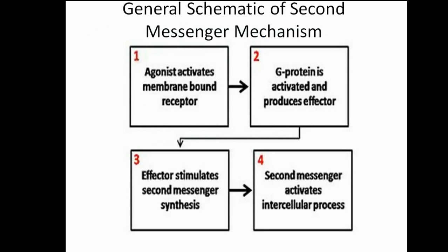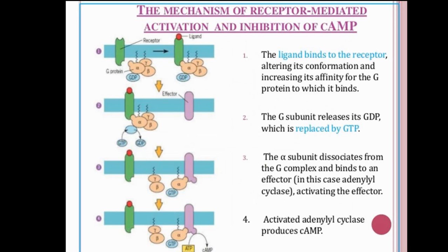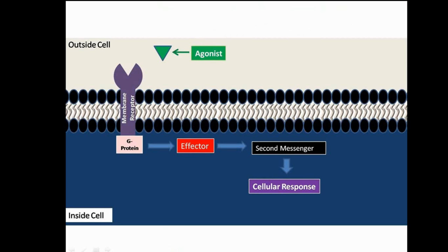This is a general schematic of the 2nd messenger mechanism divided into 4 phases. In phase 1, an agonist activates a membrane-bound receptor. In phase 2, G-protein is activated and produces an effector. In phase 3, the effector stimulates the 2nd messenger system. In phase 4, the 2nd messenger activates intracellular processes. The schematic also shows the agonist in green attaching to membrane-bound receptors, which activates G-protein, which sensitizes the effector, which produces the 2nd messenger, causing the cell response intracellularly.